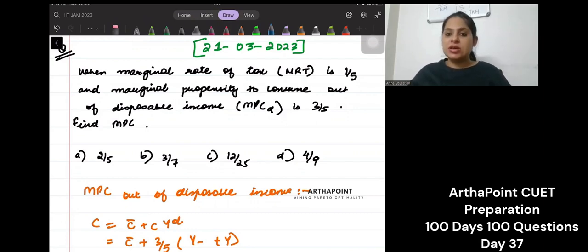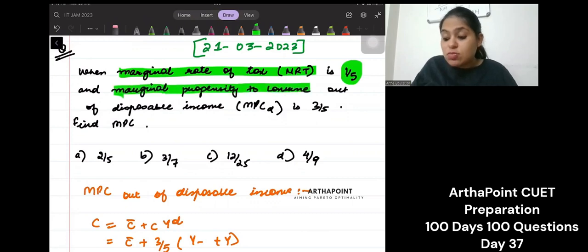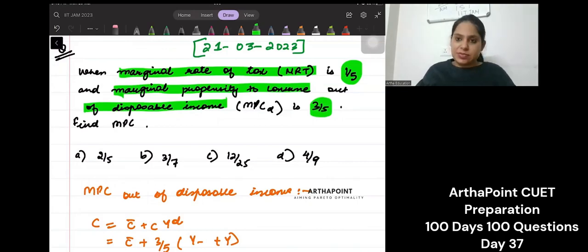So what is given here? Basically, you are given marginal rate of tax, that is 1 by 5, right?